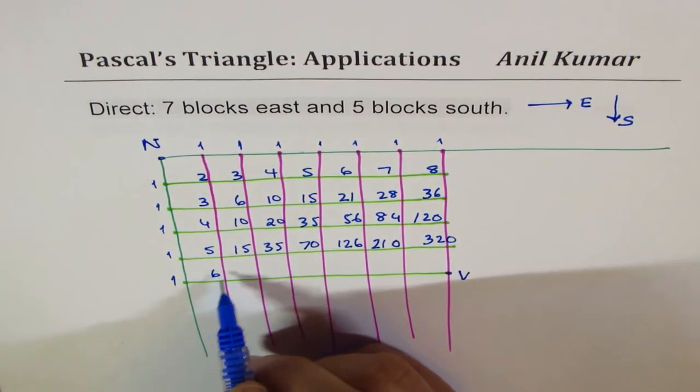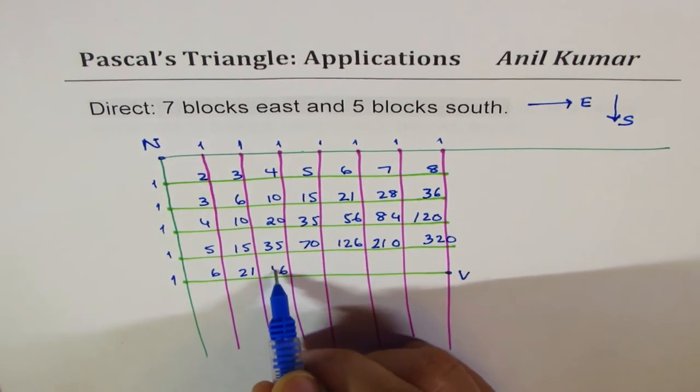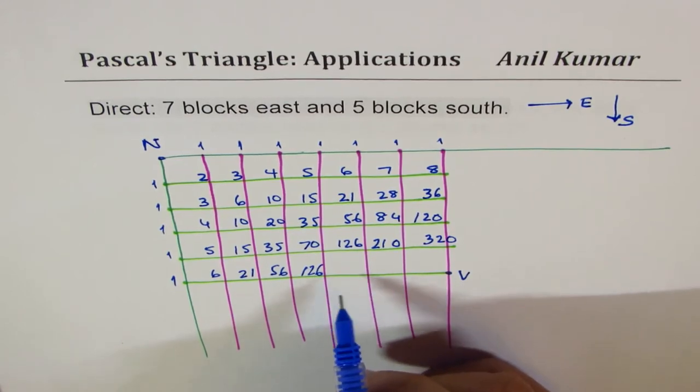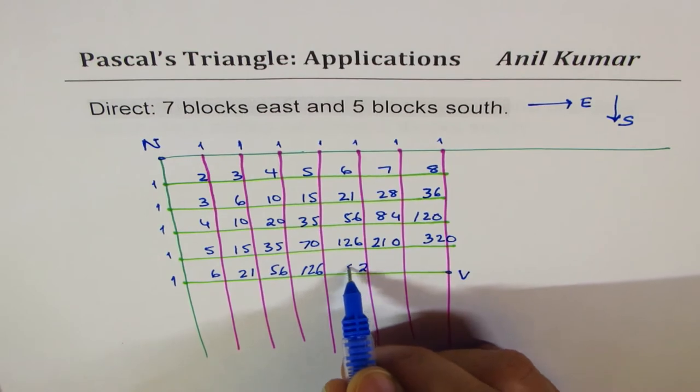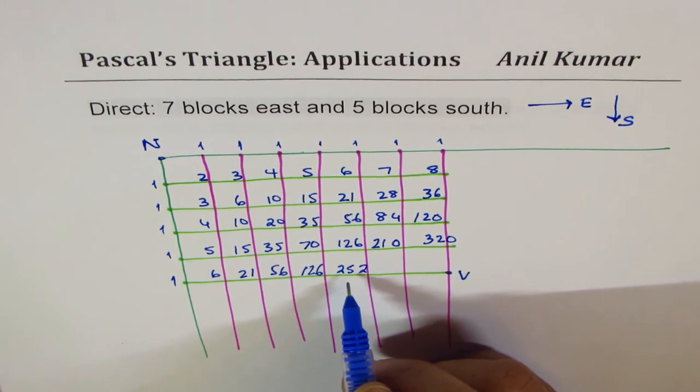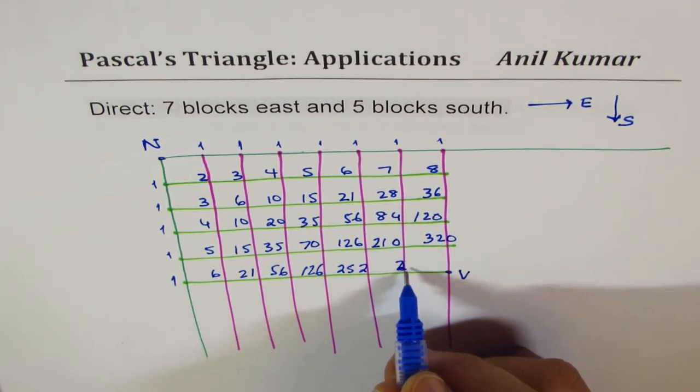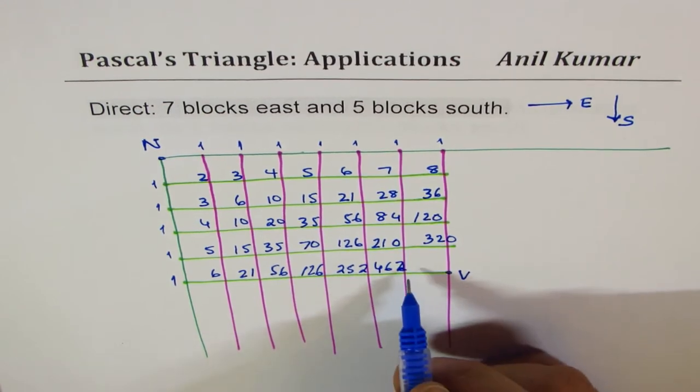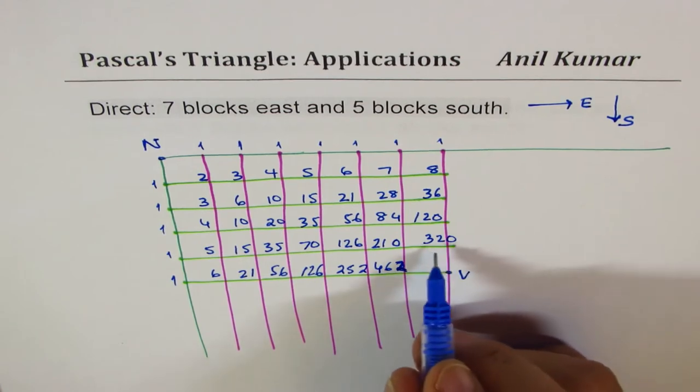Five plus one is six, six and fifteen is twenty-one. When you add this, you get fifty-six. When you add this, you get one twenty-six. And then you add this, it is two times, so two fifty-two. So it gets two fifty-two. And then you add this, two, one, five, one, six and four sixty-two.